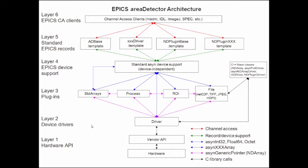A plugin, when activated and told to get data from the driver, registers for a callback, and every time the driver gets a new array it calls the plugin to do its processing. The plugins and the driver communicate through standard asyn device support to the EPICS records above — binary output records for starting/stopping acquisition, analog output or longout records for binning, and so on — using standard EPICS records through standard asyn device support, which is device-independent.